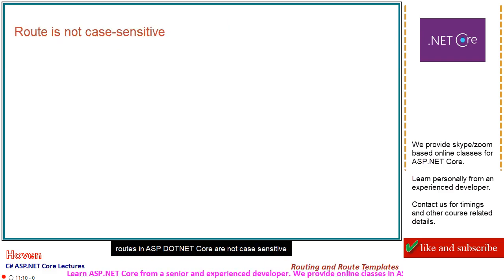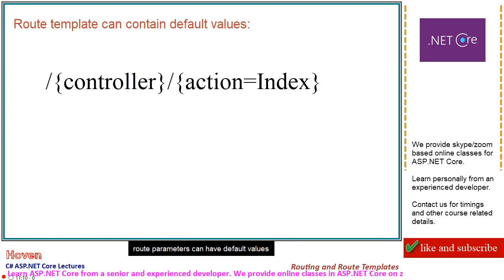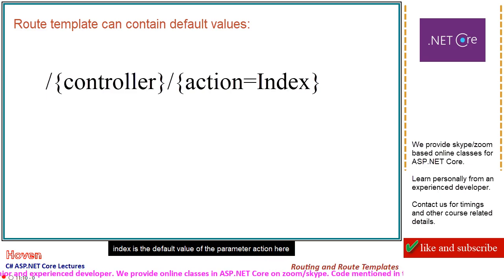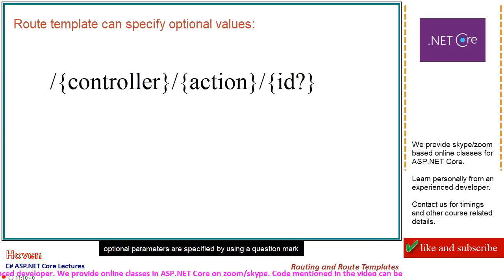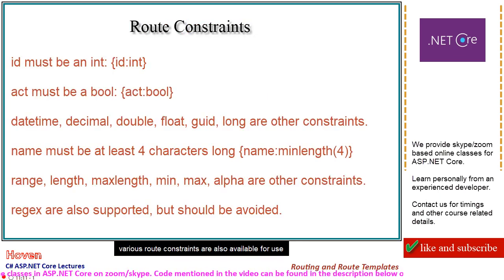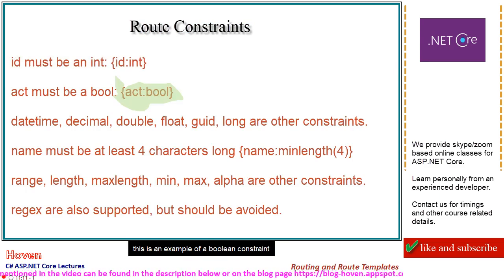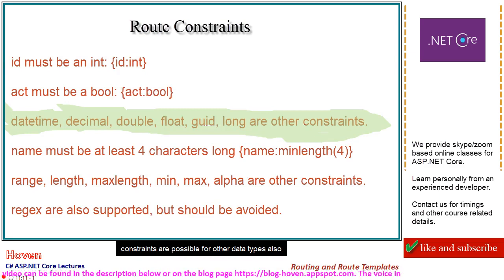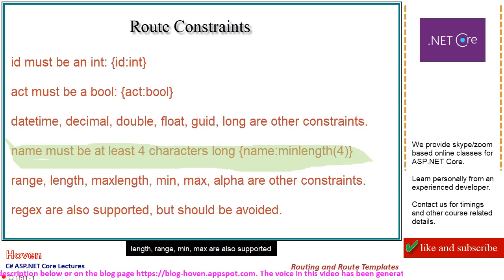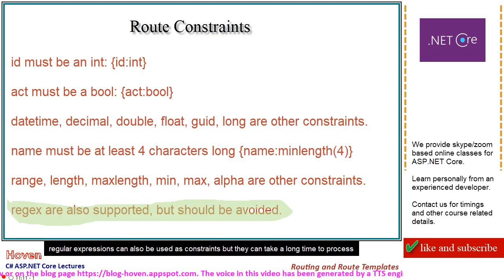Routes in ASP.NET Core are not case sensitive. Route parameters can have default values — for example, Index is the default value of the parameter action here. Optional parameters are specified by using a question mark. Various route constraints are also available. For instance, the route is matched only if the ID is a number — this is an example of a Boolean constraint. Constraints are possible for other data types also. Length, Range, Min, and Max are also supported. Regular expressions can also be used as constraints, but they can take a long time to process.